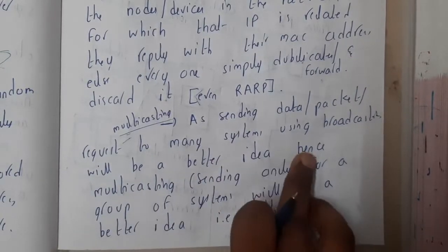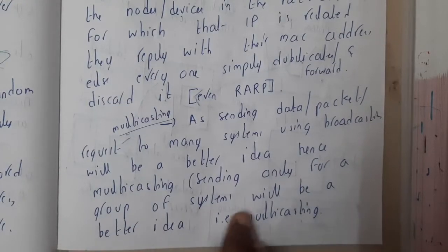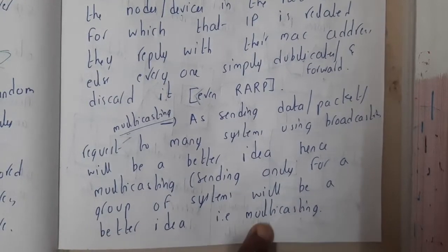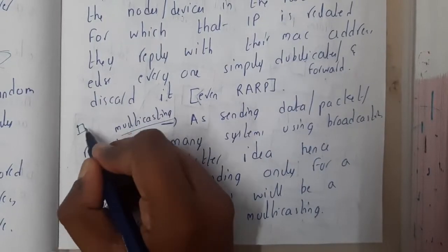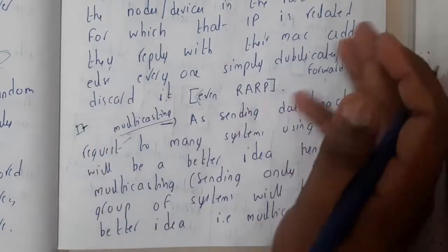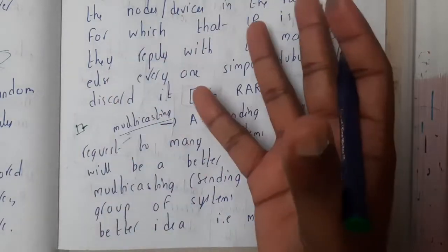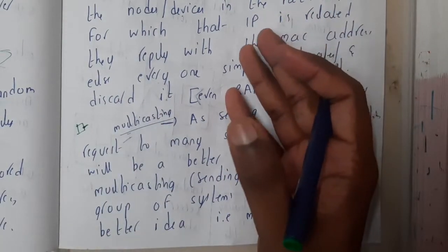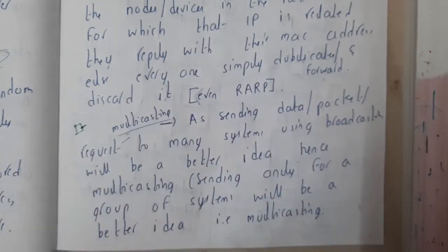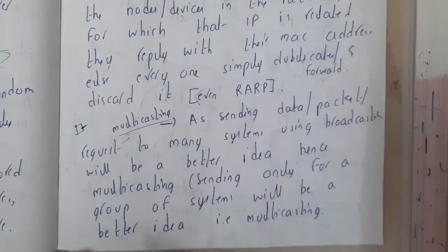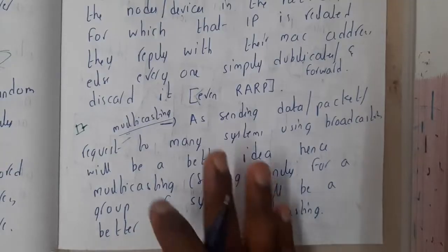Sending data or packet or request to many systems using broadcasting will be a better idea, hence multicasting—that is, sending only for a group of systems—will be a more better idea. Assume that you want to send this information to a huge network where thousands or lakhs of nodes are there. In that situation, this broadcasting will be a bit dangerous, right? You will be sending the data to everyone.